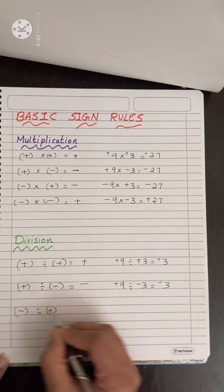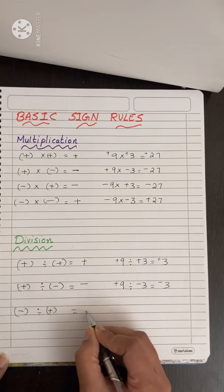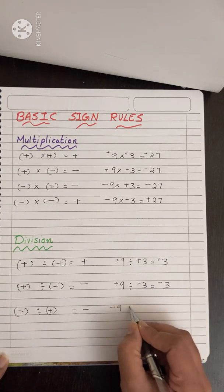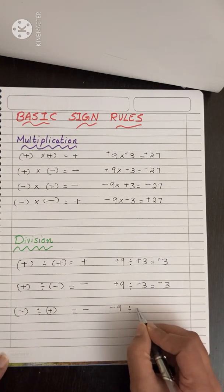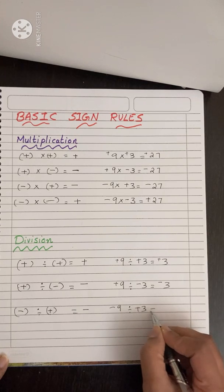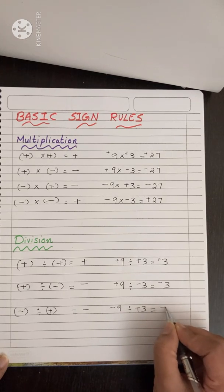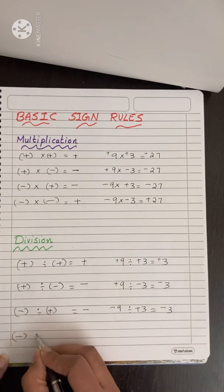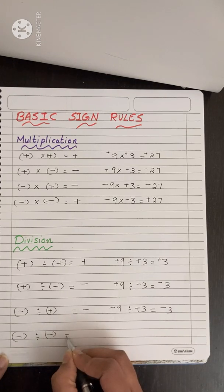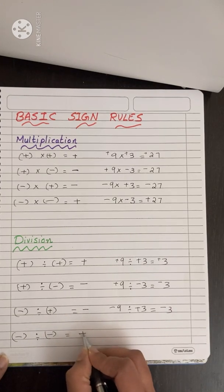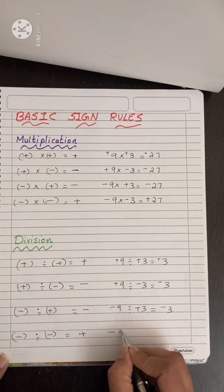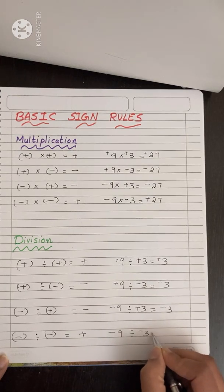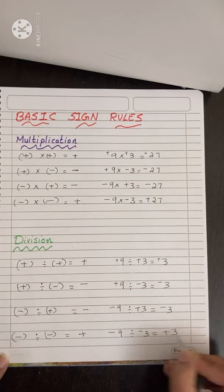Minus divided by plus — the sign will be minus. For example, minus 9 divided by plus 3 equals minus 3. Minus divided by minus equals plus. For example, minus 9 divided by minus 3 equals plus 3.